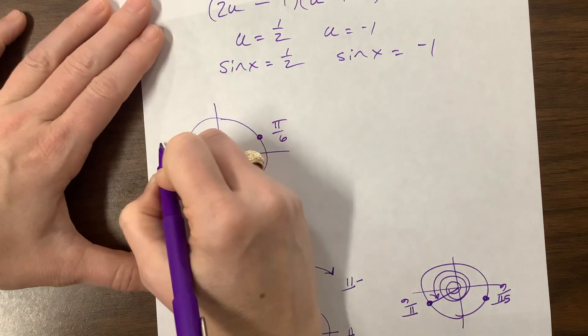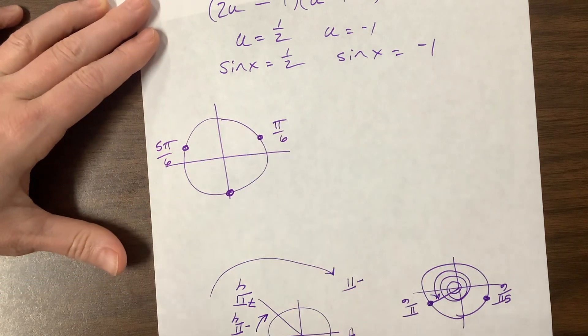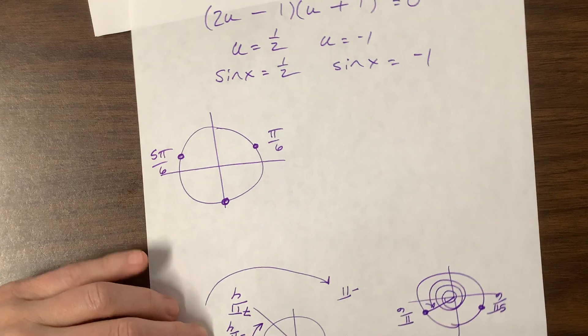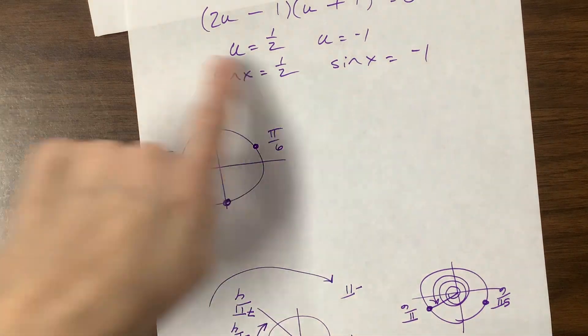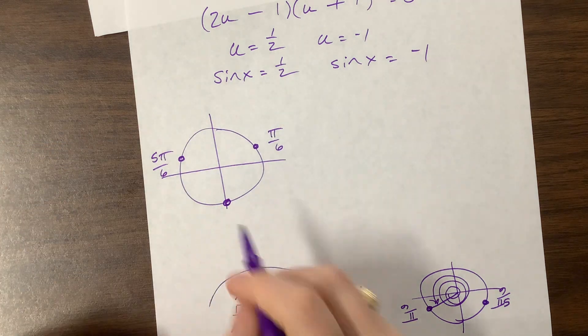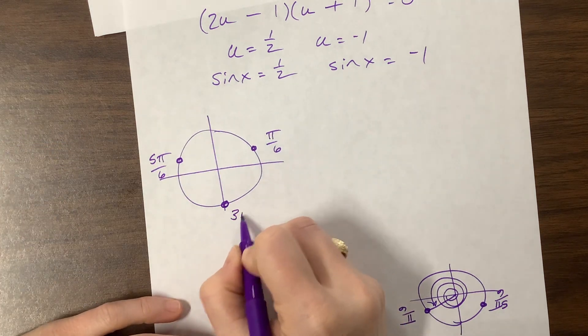This is 5π/6. I'm only drawing the unit circle to help you see it. This should be in your head. You should be able to go from here to your answer just by seeing the unit circle in your head. This is 3π/2.